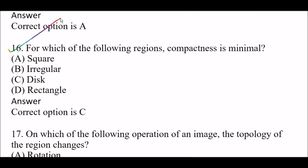Next question: For which of the following reasons is compactness minimal? Option A: square, Option B: irregular, Option C: disc, Option D: rectangle. The right answer is Option C, disc. For a disc region, compactness is minimal.